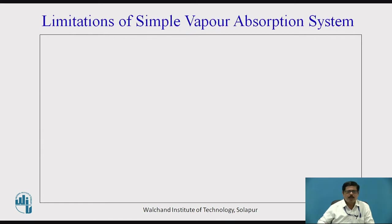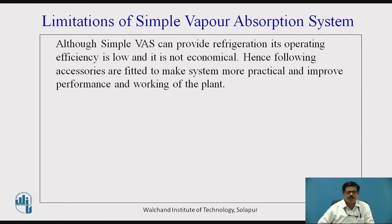Now let us see what are the limitations of simple vapor absorption system. As we have seen in the previous video session, the simple vapor absorption system can provide the refrigeration, i.e., required low temperature. However, its COP or operating efficiency is low, and so it is not economical. Therefore, some accessories are fitted to make the system more practical, as well as to improve its performance and to improve the working of the plant.